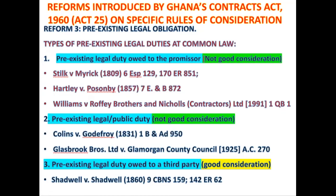So a subpoena has been served on somebody to appear in court to testify, but a party to the case told that person: if you will come and testify I promise to pay you an amount of money because I need your evidence. This person was already bound to go and testify. When the person testifies and then decides to sue to enforce that promise, the court will say: what you performed — that testifying — you were already bound to do it. The law had already imposed a duty upon you to perform it. So you cannot use what you were already bound to do as a basis to sue to enforce the promise made to pay you five thousand dollars. Under the common law, the performance of a pre-existing legal or public duty shall not amount to a valid form of sufficient consideration.